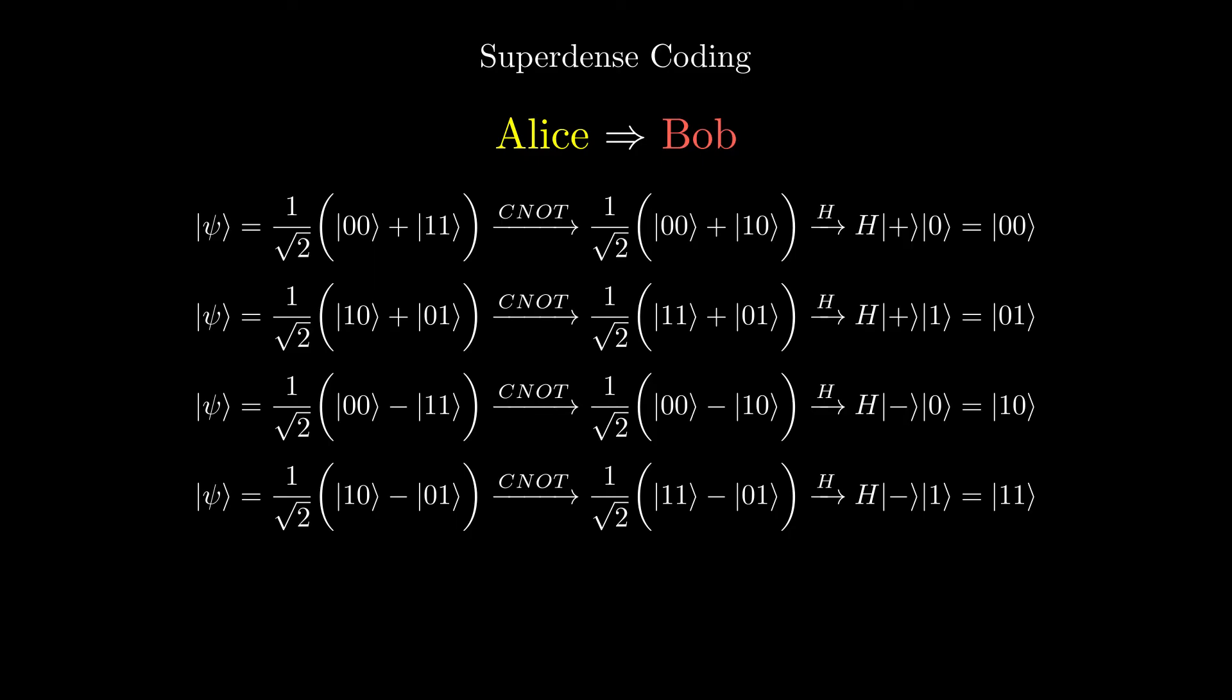All Bob now has to do is measure the qubits and he will get the two bits Alice intended to send. As you can see, with quantum computers, we can send two bits of classical information by sending one qubit. This works, since there are two entangled qubits in the entire system.